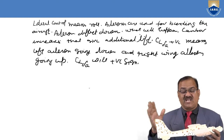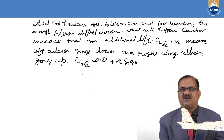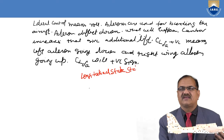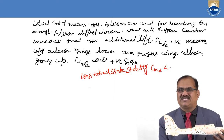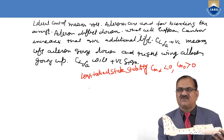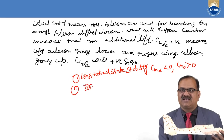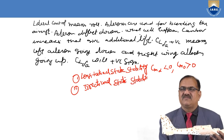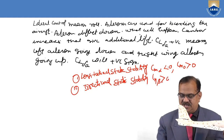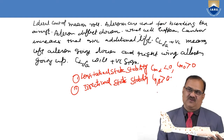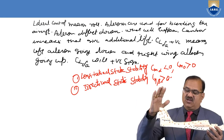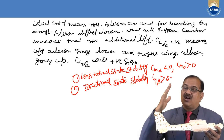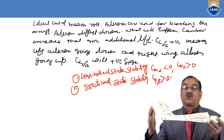In the longitudinal static stability, Cm alpha should be less than 0 and Cm naught should be greater than 0. This was the longitudinal stability. And for the directional static stability, Cn beta should be greater than 0. This we have already completed. For the directional case, your vertical tail was the important component affecting directional stability. But for the rolling also, or for the lateral, the lateral control means roll.